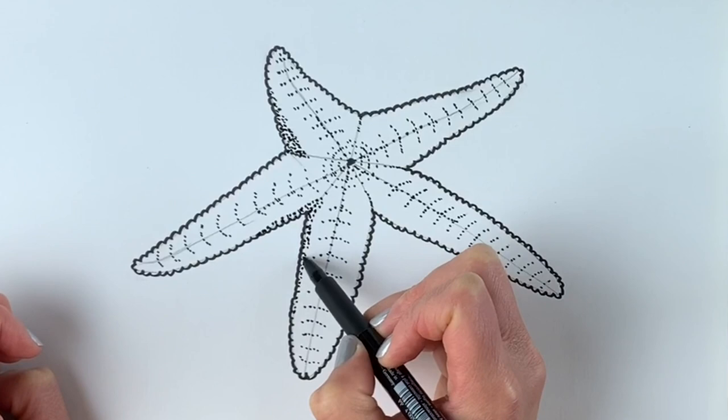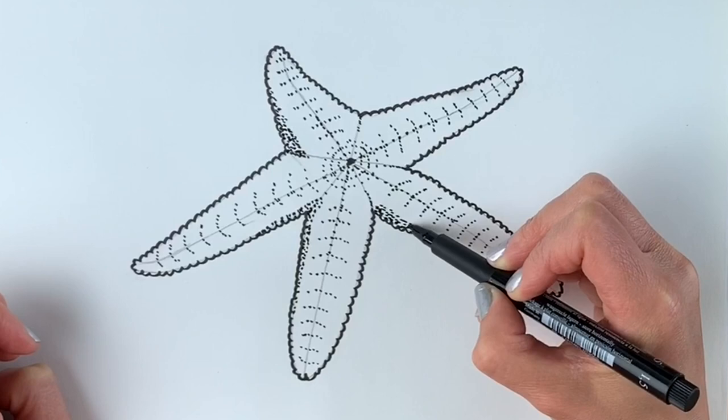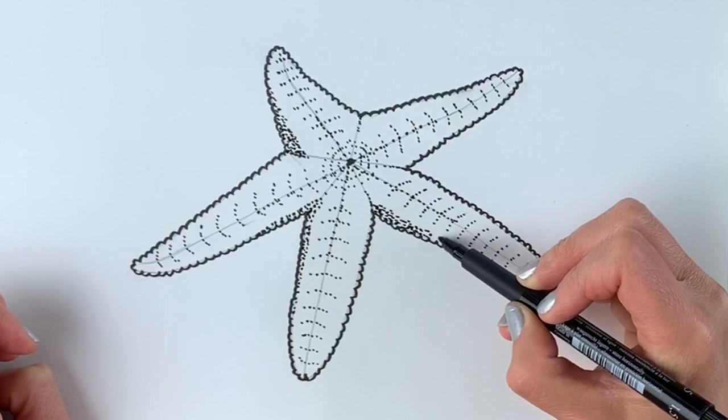So this technique, using lots of little dots, it's called pointillism. I've actually got a tutorial on it if you're interested. I'll put a link up in the top right hand corner now. So just draw lots of these little dots going all along the edge here.